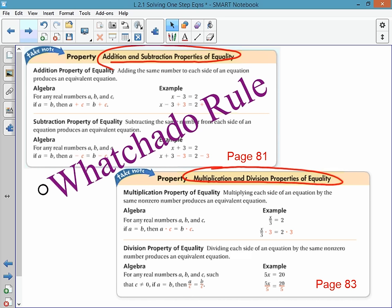It's the what you do rule. What you do on one side of an equation, you always do on the other side. If you add on one side, then you're going to add on the other side. If you subtract, or if you multiply or divide on one side of an equation, then you'll do the same thing to the other side.